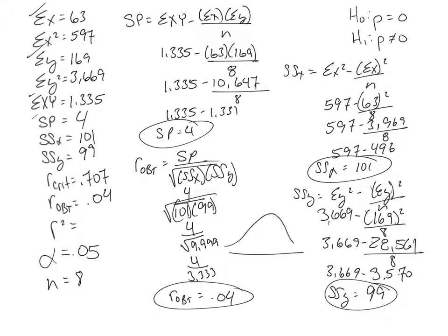Okay, and here's what it would look like, right, so we have, we wanted to be right here, 0.707, and we weren't. So our R obtained was over here at 0.04, so we failed to reject our null hypothesis, as our R obtained was less than our R crit, our critical value of R, so we have to fail to reject this null hypothesis.